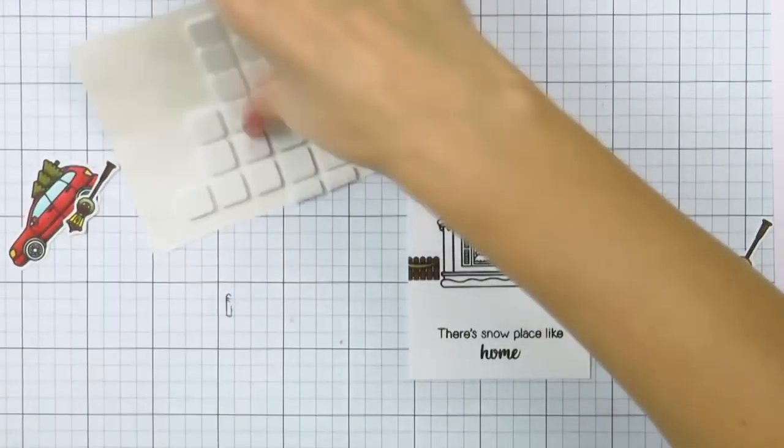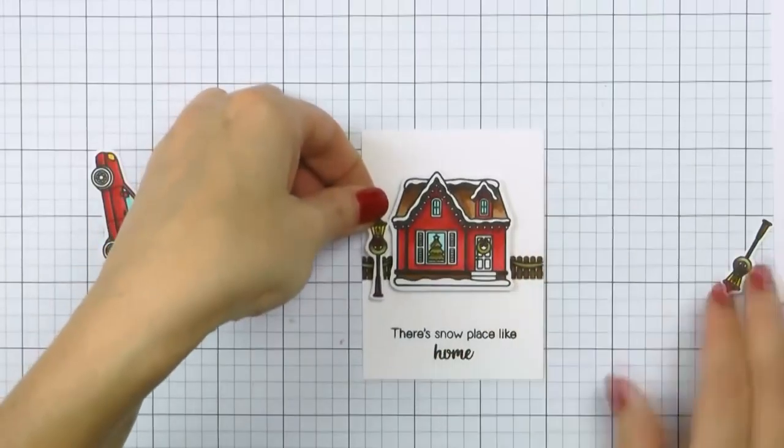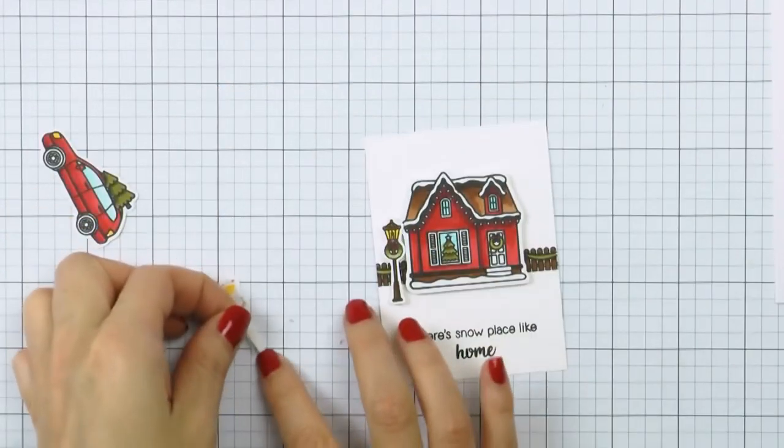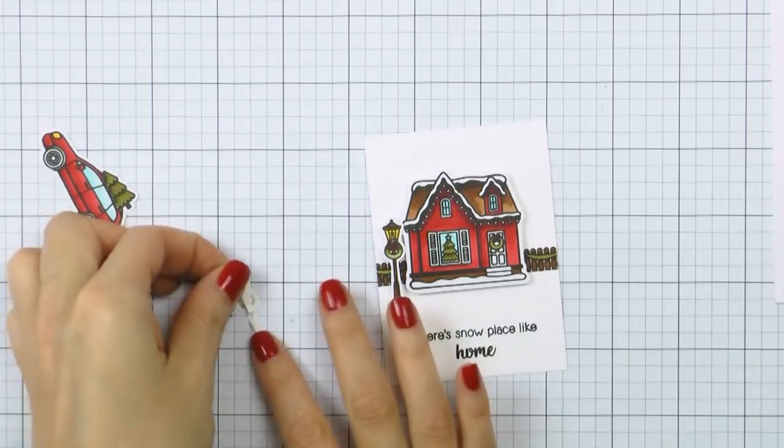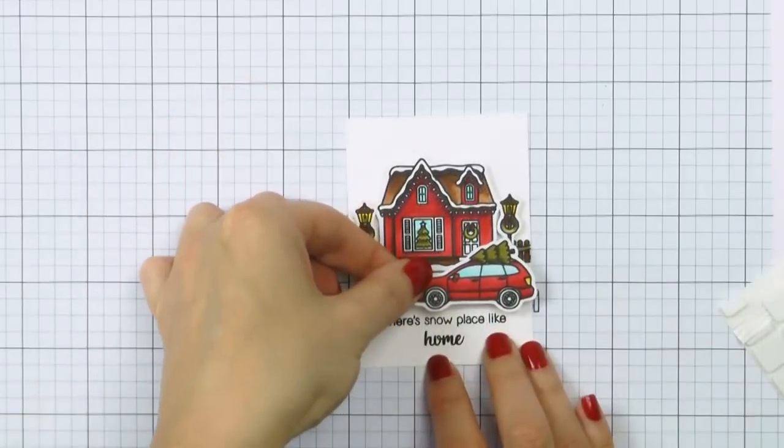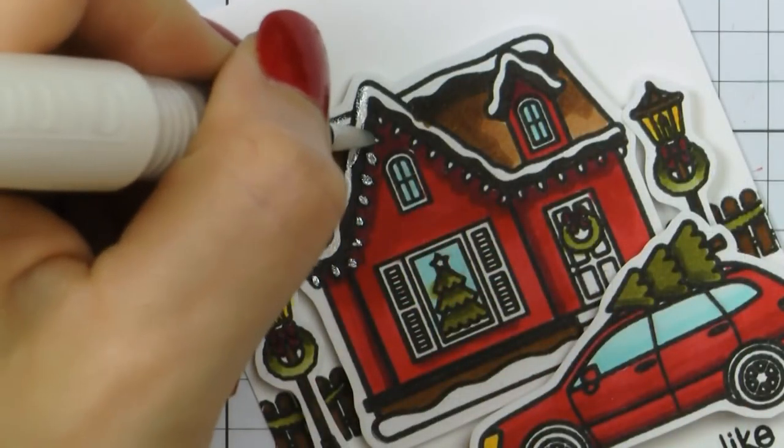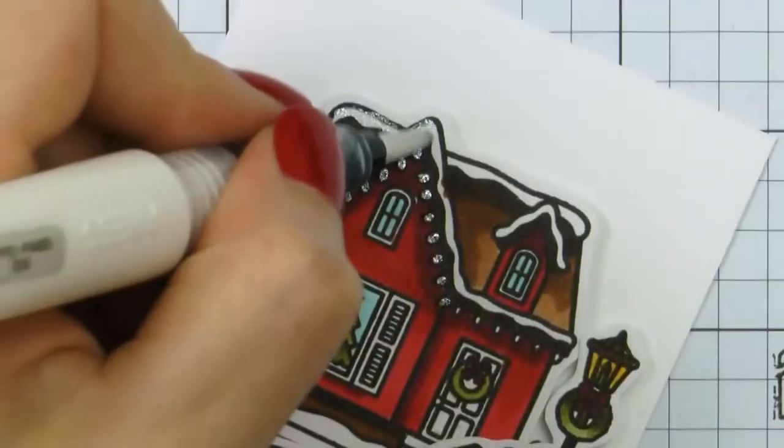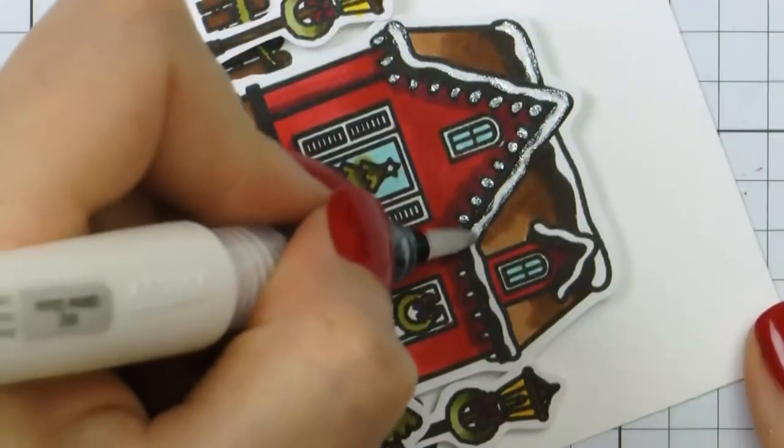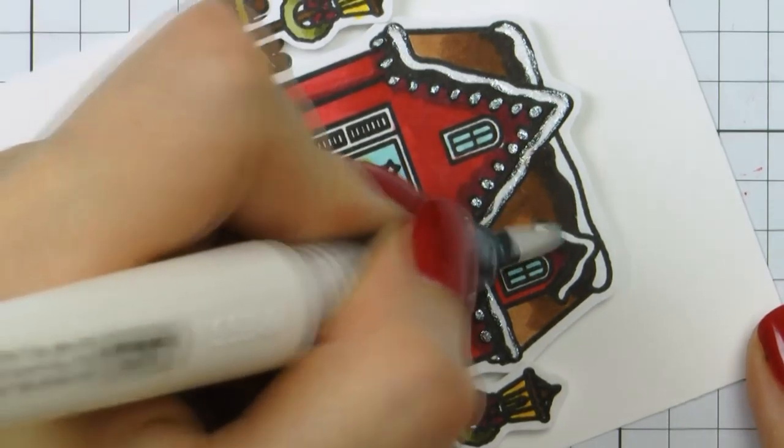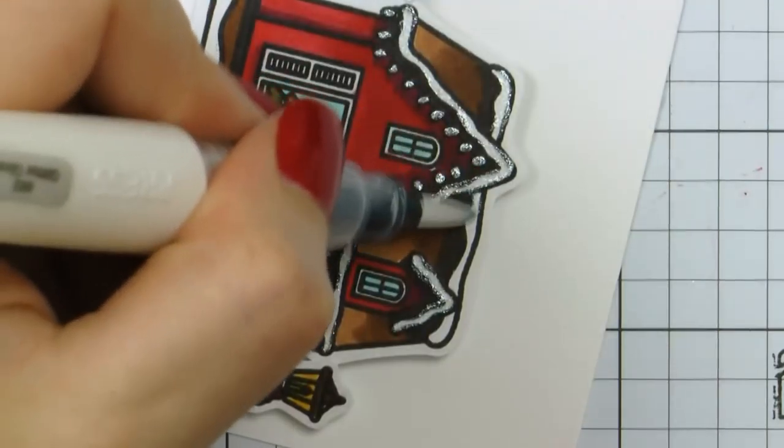I foam mounted all of my cut out pieces onto this panel forming a scene. There's a house with a fence on both sides, two lampposts in front of the fence, and a car parked in front of the house with a Christmas tree on its roof. I used Tonic Aqua Shimmer brush to add glitter to the white sections of my images, so the snow and also to the little lights hanging from the roof of the house, and I think that added just the perfect amount of sparkle to this card.